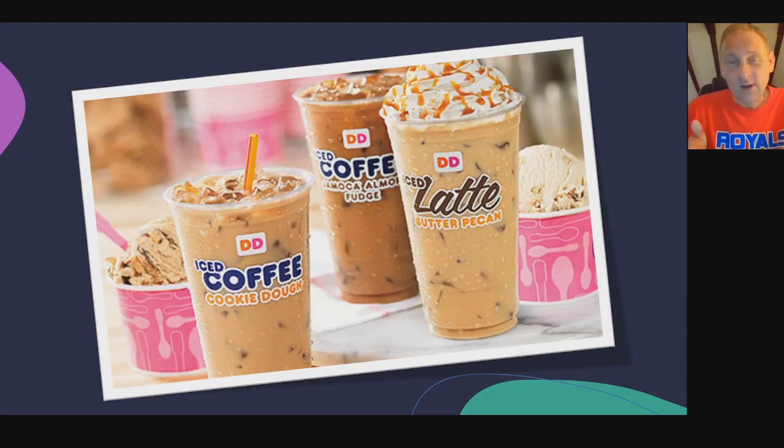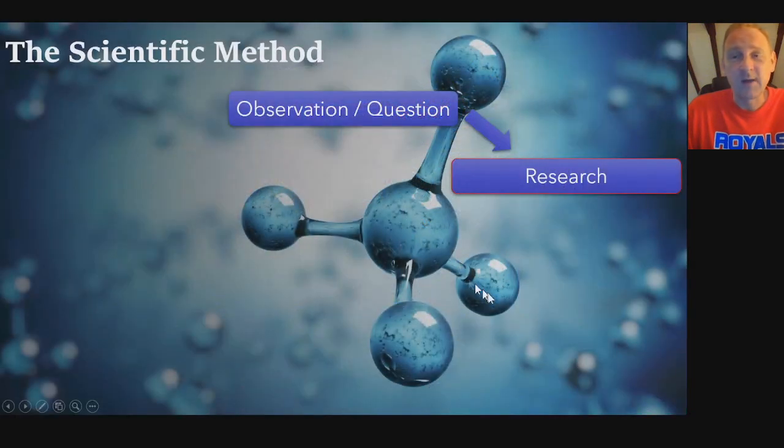Right next to Starbucks, we have Baskin-Robbins. And just right around that Starbucks, there's also a Dunkin' Donuts. You might say, well, we like Starbucks because it's not the coffee, they just make the drinks so good. Look at what kind of drinks you get at Dunkin' Donuts and the kind of drinks you can get at Baskin-Robbins that are right next to Starbucks. So that's kind of what got my mind thinking because you got other really good choices very close by.